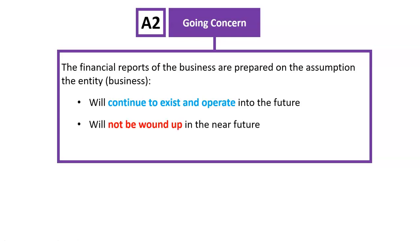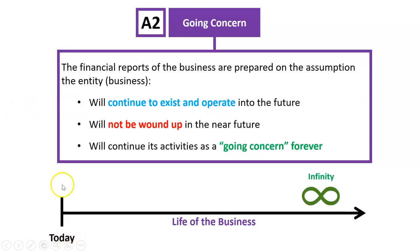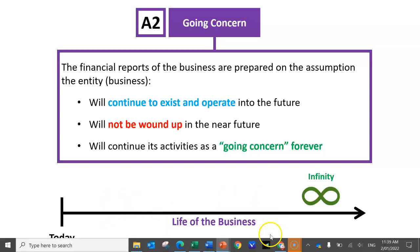We also assume it will not be wound up, closed, finished, sold, or anything like that in the near future. It will continue its activities as a going concern — an ongoing business — forever. So why are we doing this? We're going to assume that there's no line in the future that says when the business ends. It doesn't end at any point. What we assume is that it's infinite — the life of the business will continue to exist forever.